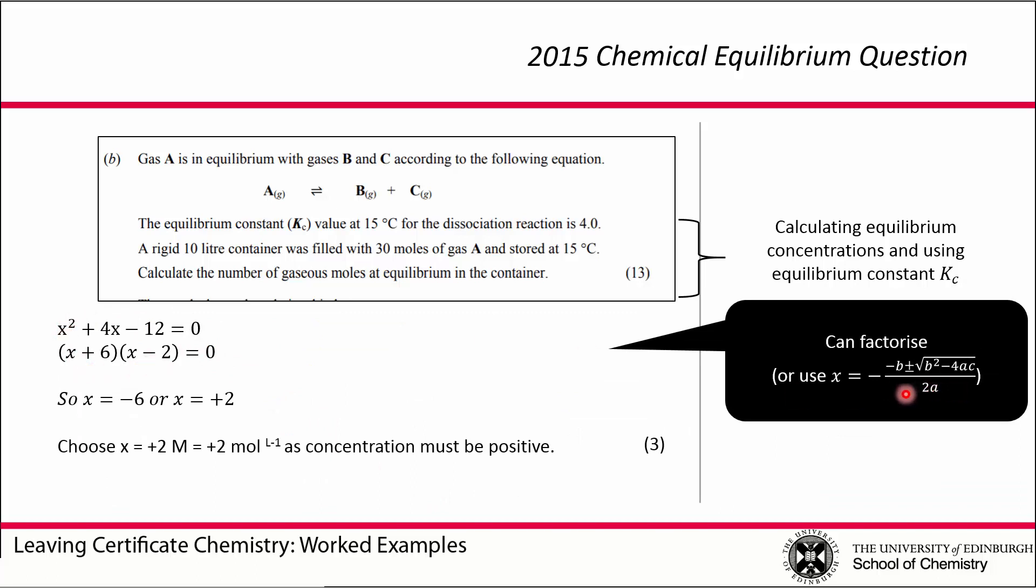Once we know this quadratic expression, we can solve for X. We can use the quadratic formula. Here you might just spot that this is easily factorisable. So we get a value either through factorising or through the quadratic formula of X equals minus 6 or X equals plus 2. X is a concentration, it cannot be negative, so we must take the positive value X equals 2 molar, which is 2 moles per liter.